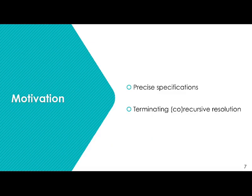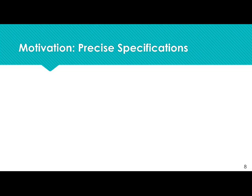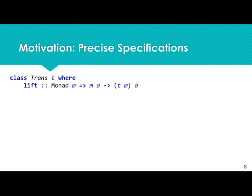Let's look at two small examples. First, consider the well-known monad transformers. A monad transformer is usually represented in Haskell through the transformer class. A transformer T has a lift method which can lift a monadic value of type m a into T m a. The property that it can lift any monad m into a new monad T m can't actually be made explicit in Haskell at the moment — it's either left implicit or placed in comments, and in any case the type system doesn't have access to this information.